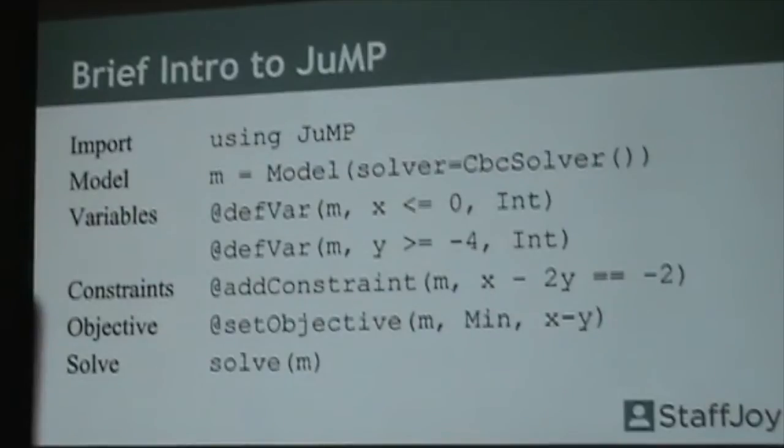Basically, to create the variable x, if you want x to be an integer that's less than zero, you use a statement like this where you're saying, on the model, I want to create the variable x. It's less than or equal to zero and subtype integer. Do the same thing here for variable y.